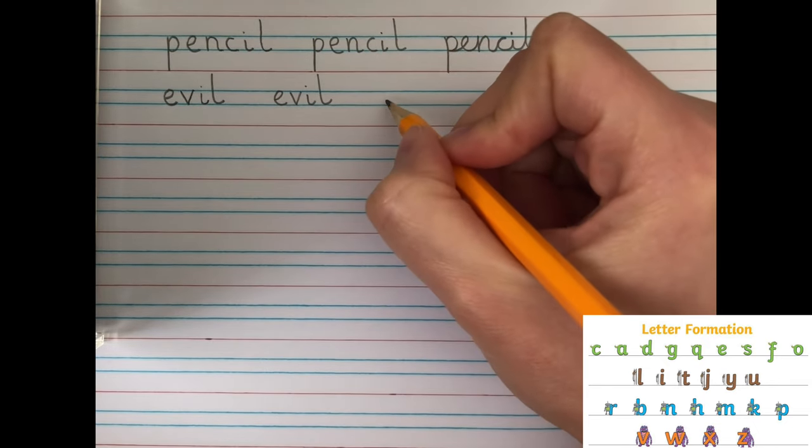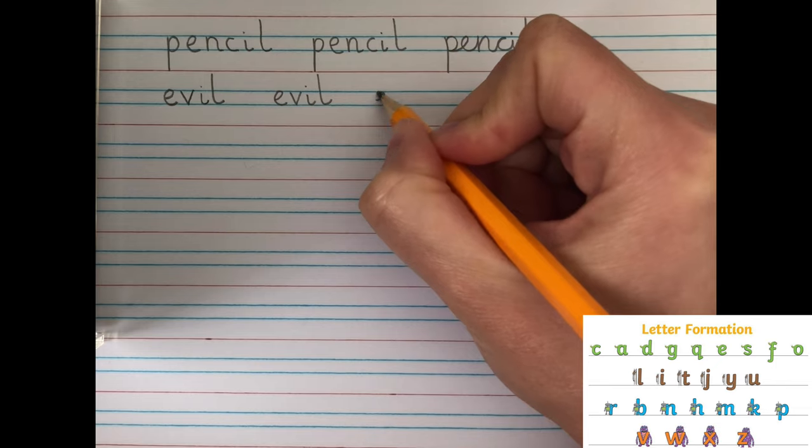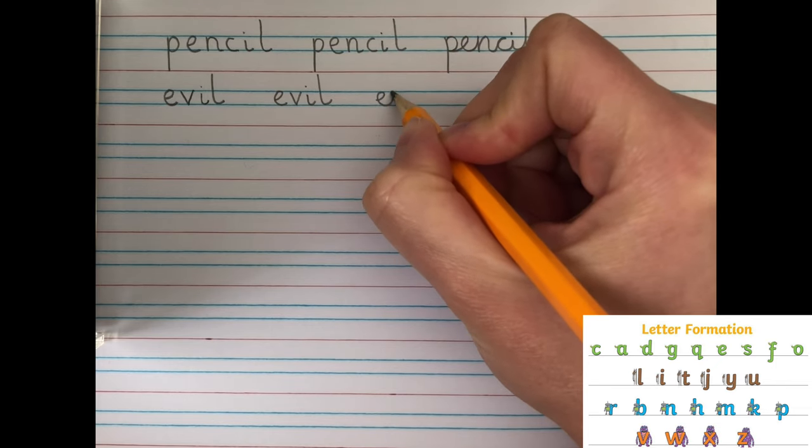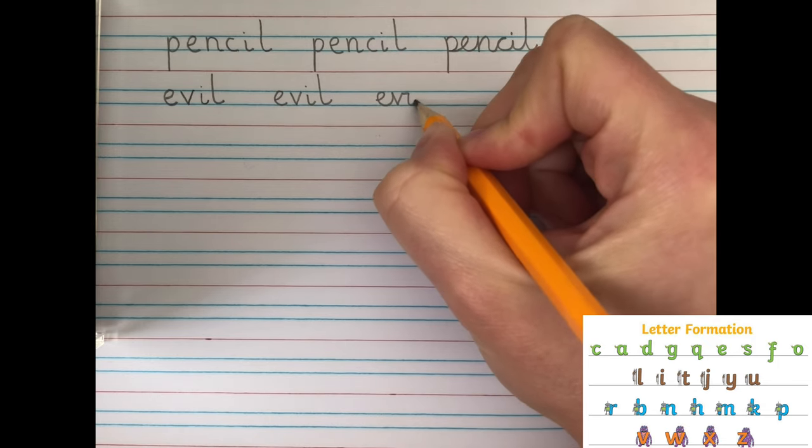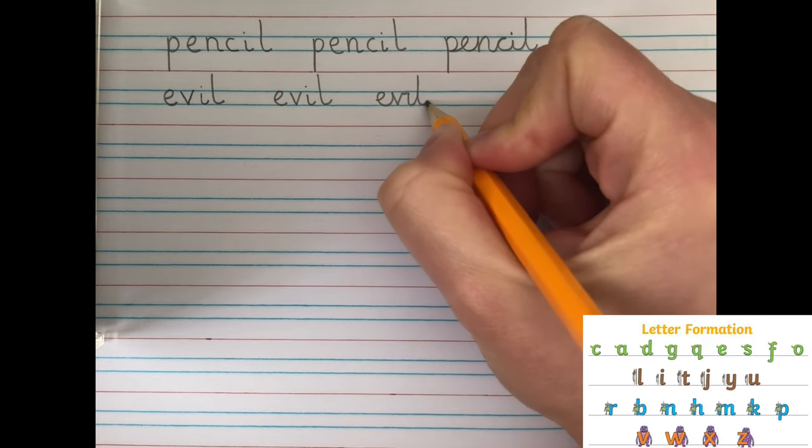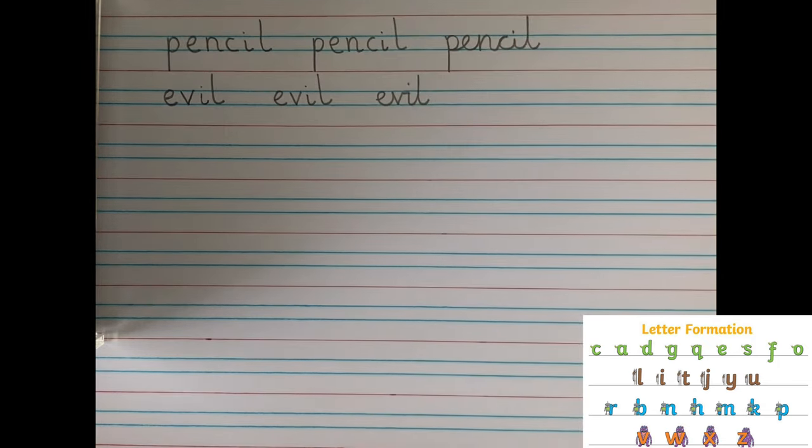And let's have a go at joining. So, keeping my pencil on the paper for that I, and then up to the L, and then dot the I at the end. Evil.